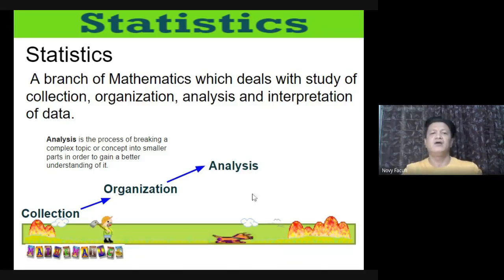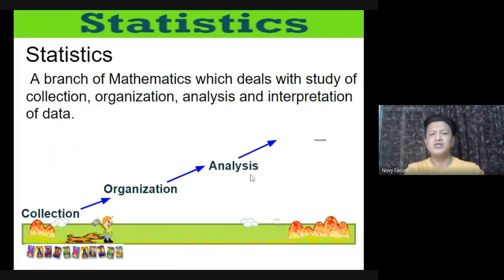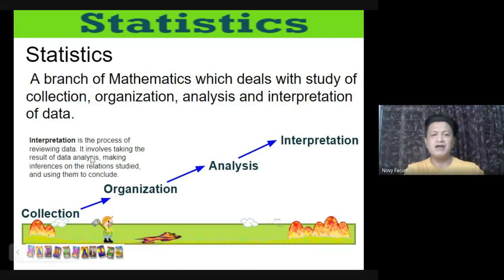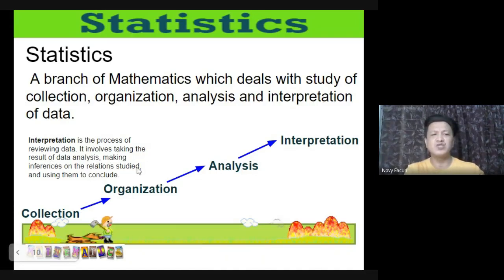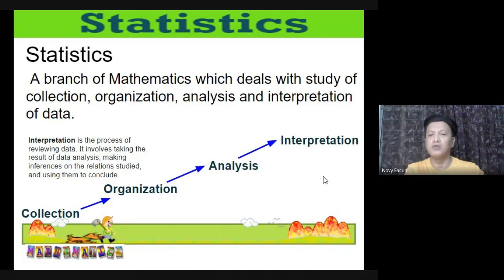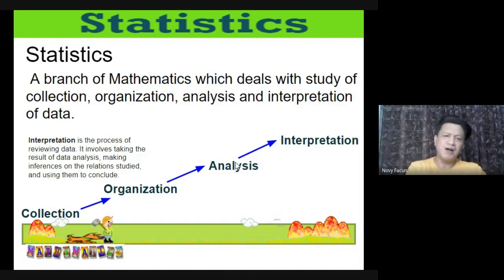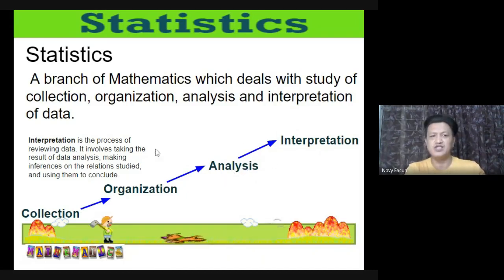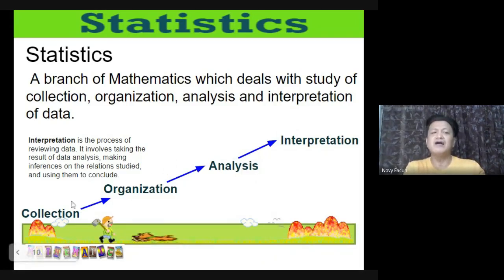Interpretation is the process of reviewing data. It involves taking the results of data analysis, making inferences on the relationships studied, and using them to draw conclusions. We check whether the tentative findings from analysis are correct and then form a conclusion. The step-by-step process — collection, organization, analysis, and interpretation — must be followed in order.